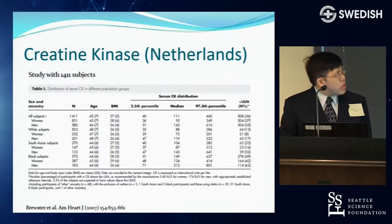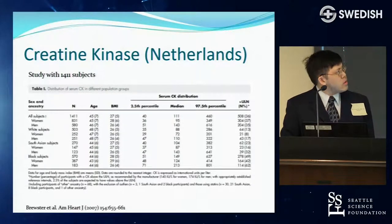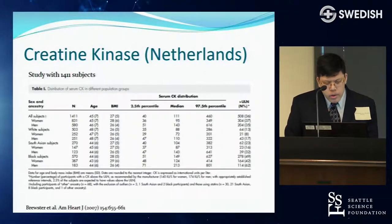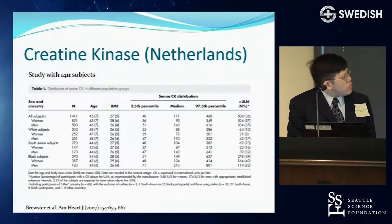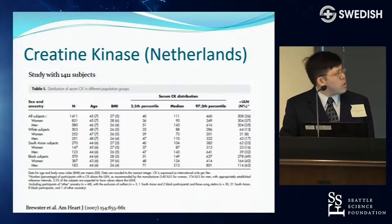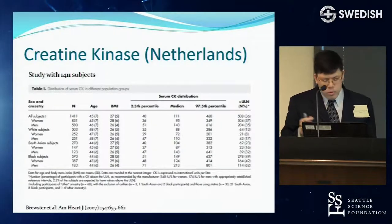A study in the Netherlands of 1,400 subjects found that the upper limit of normal at the 97.5th percentile differs across ethnic groups, showing clear ethnic differences in CK. So what's normal for one patient may not be normal for another.